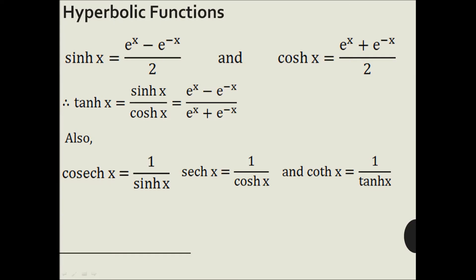Hyperbolic functions are analogous to trigonometric functions. For example, the trigonometric sine function is defined as sin x = (e^(ix) − e^(−ix)) / 2i, which we saw in the last session. The hyperbolic sine function is defined as sinh x = (e^x − e^(−x)) / 2.